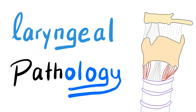Hey guys, it's Medicosis Perfectionalis, your favorite medical channel, one more time. This is the 24th video in my playlist called Pulmonology or Pulmonary Medicine. We have discussed acute epiglottitis before, as well as croup, also known as laryngotracheobronchitis. Acute epiglottitis is caused by Haemophilus influenza B, and croup is caused by parainfluenza virus, which is a paramyxovirus — a negative sense RNA virus.